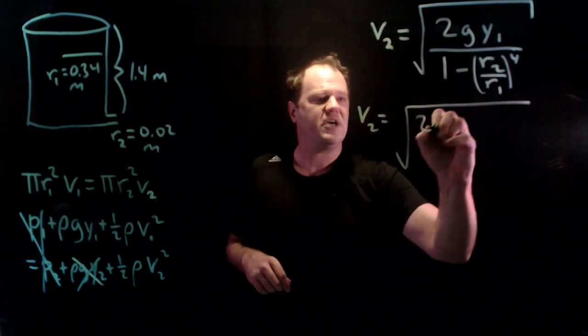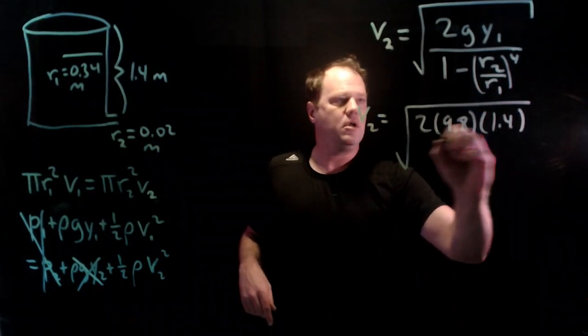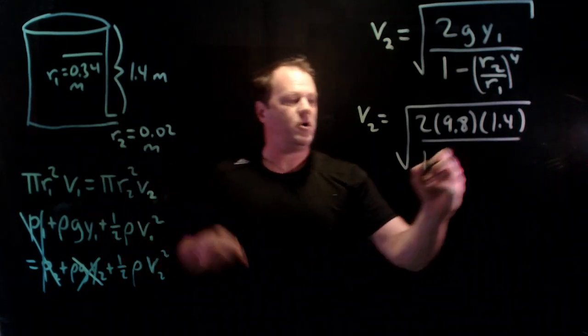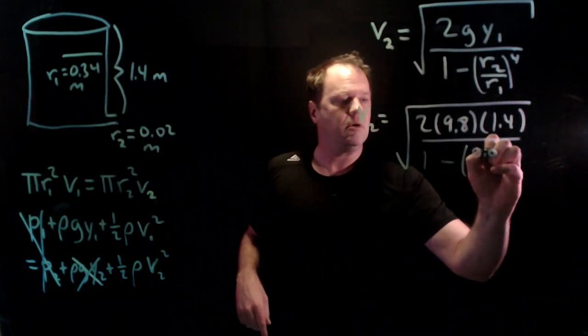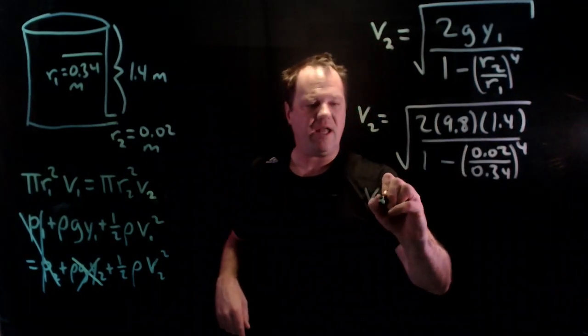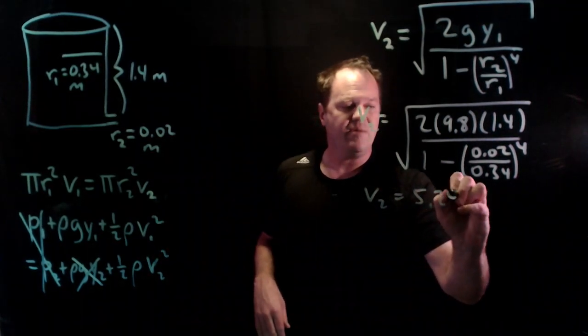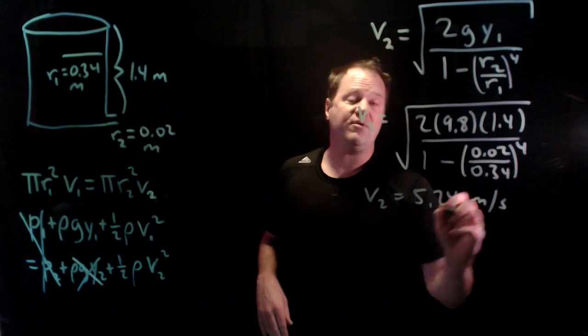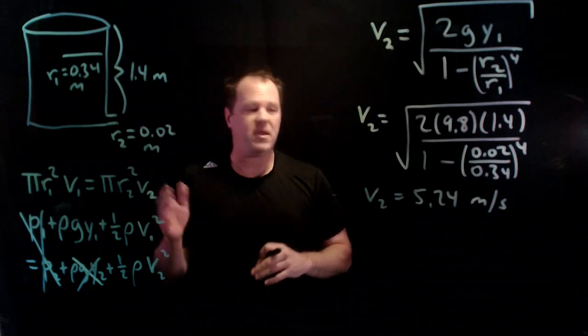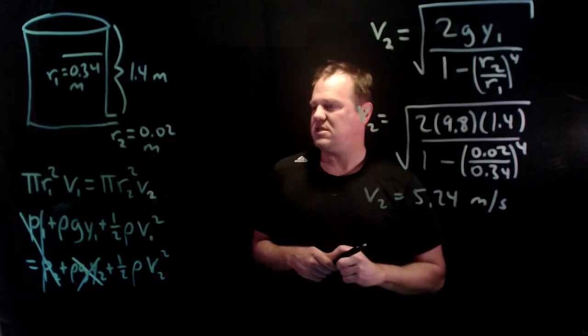So 2 times 9.8 times the height 1.4, times 1 minus the radius ratio, so r2 is 0.02, r1 is 0.34, raise that to the fourth, and I find that the speed that the fluid comes out is 5.24 meters per second. That's actually what you would get if you just did square root of 2g times y. You get 5.24, maybe a few more digits out we'd find a difference, but it's basically the same answer.